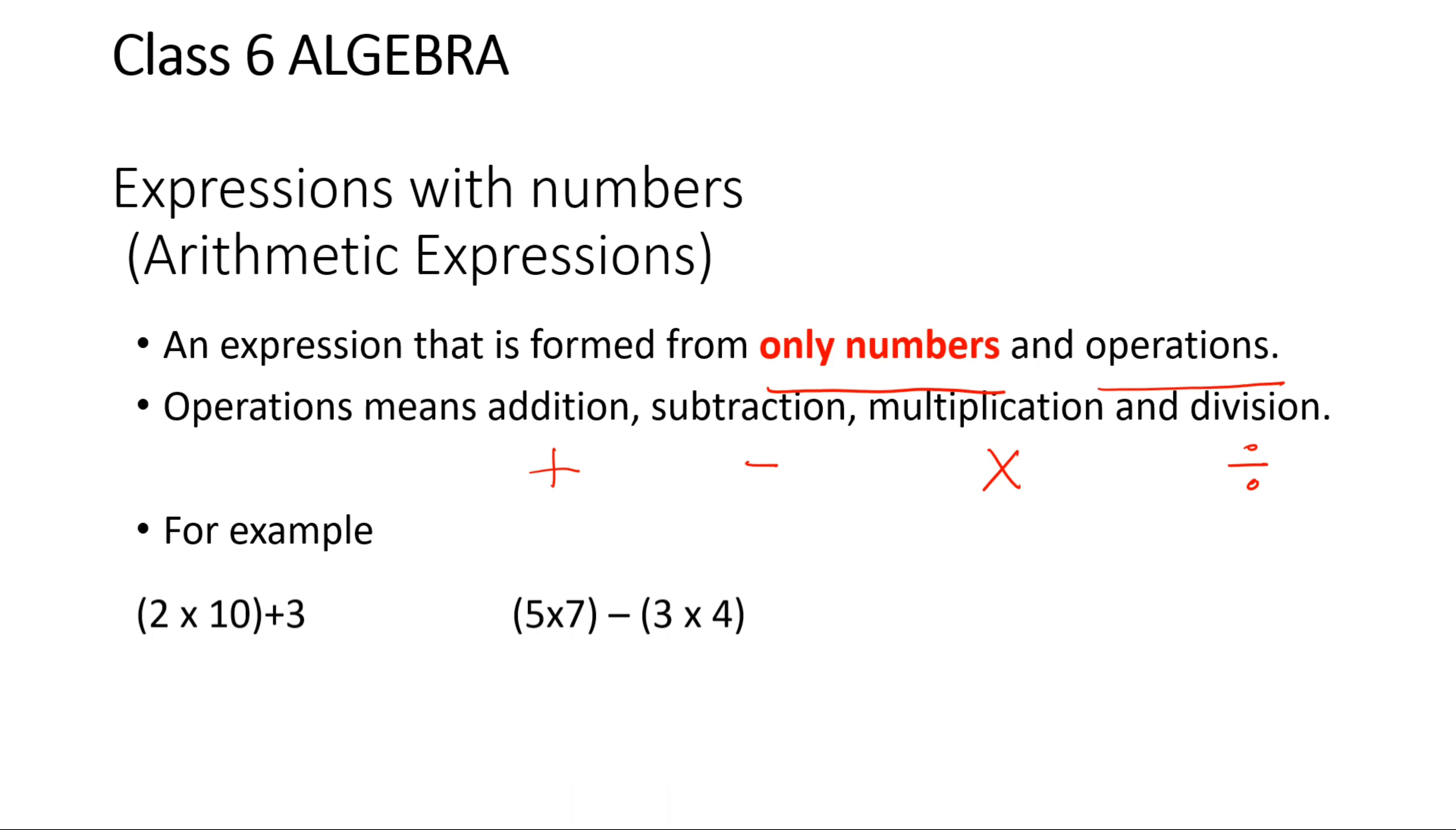Let's see the examples: 2 times 10 plus 3. So there's a multiplication sign and addition sign and all numbers. The second one: 5 times 7 minus 3 times 4. So again all numbers and two of the signs have been used.